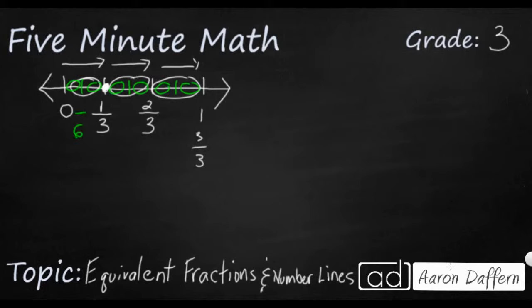So if I count these little hash marks starting from left to right, so this is going to be my one-sixth. And where my one-third is, that's my two-sixths. So there's my equivalent fraction.